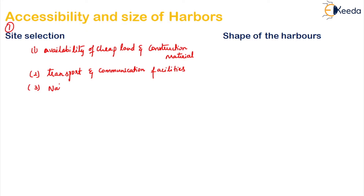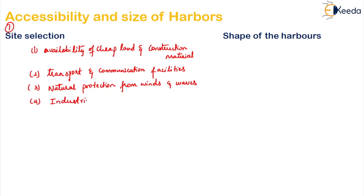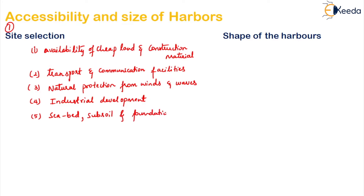Normally we should try to check for natural protections from wind and tide. If they are not there, we will build artificial ones or go for semi-natural. But we will try to find natural protections from the wind and waves. Next, there should be some industrial development around the place where you are trying to come up with a harbour. Then we have to take care of the seabed, subsoil, and foundation conditions.